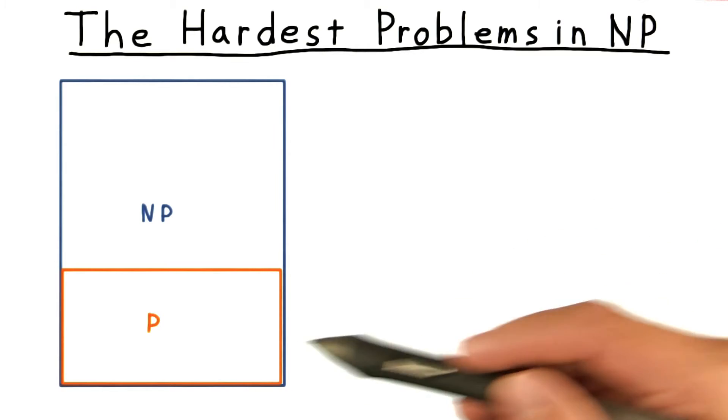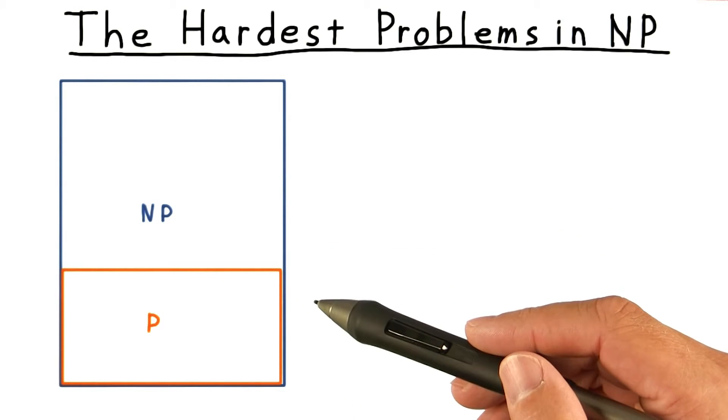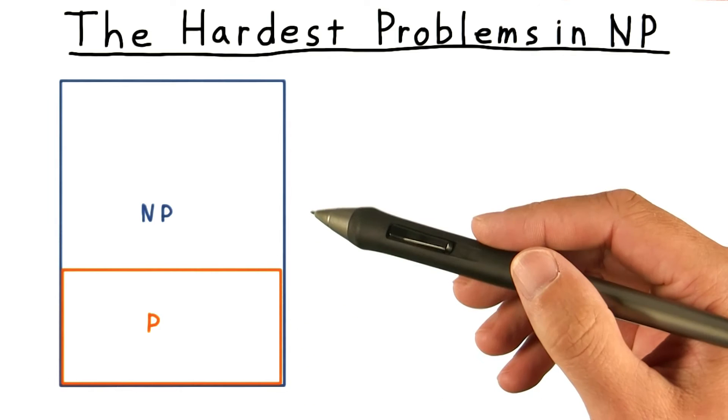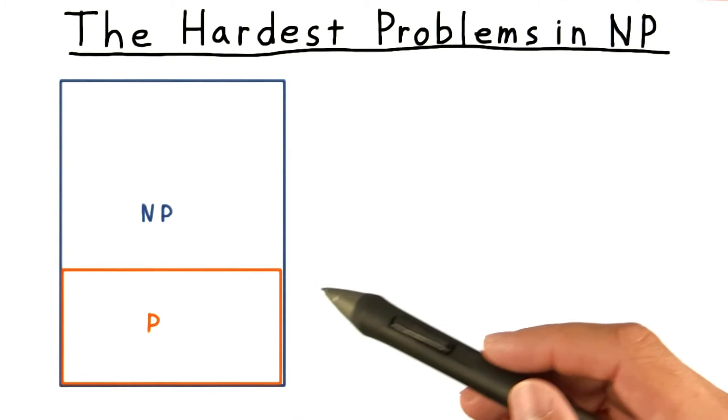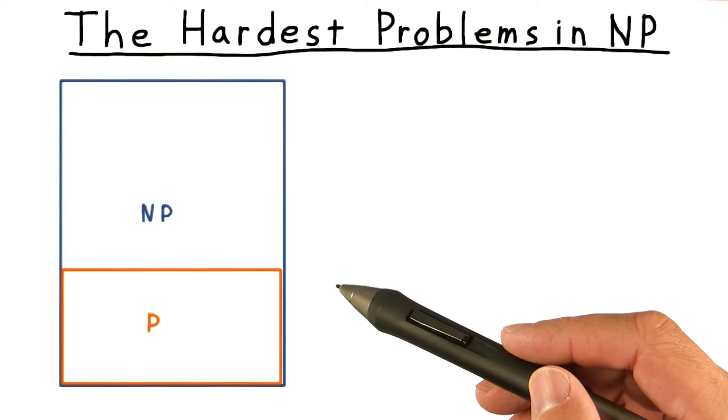With our previous discussion of the classes P and NP in mind, you can visualize the classes like this. Clearly P is contained inside of NP, and we're pretty sure that this containment is strict.